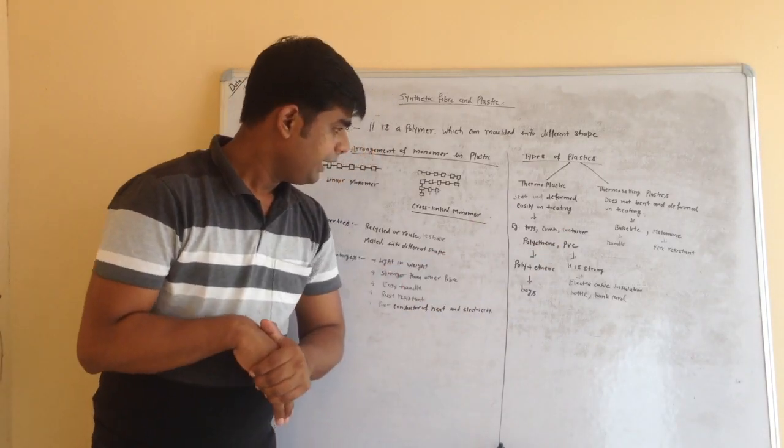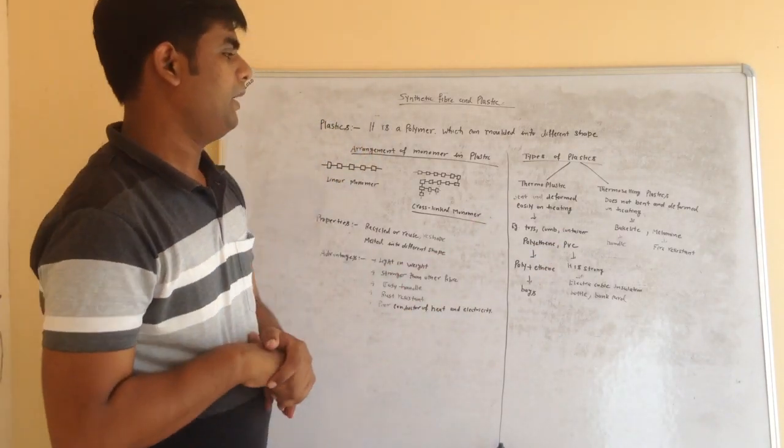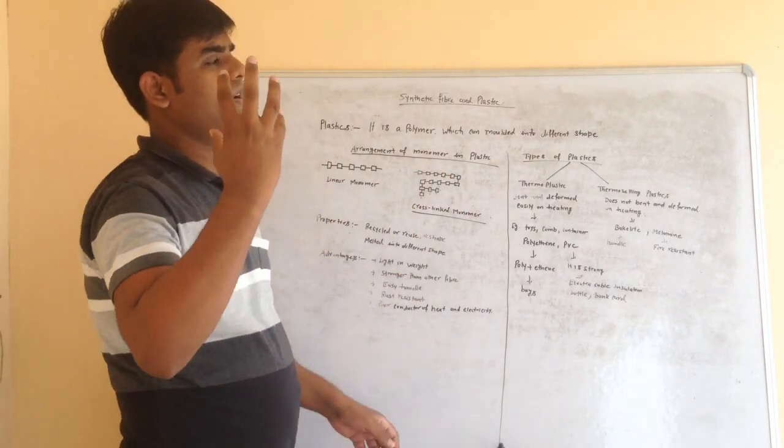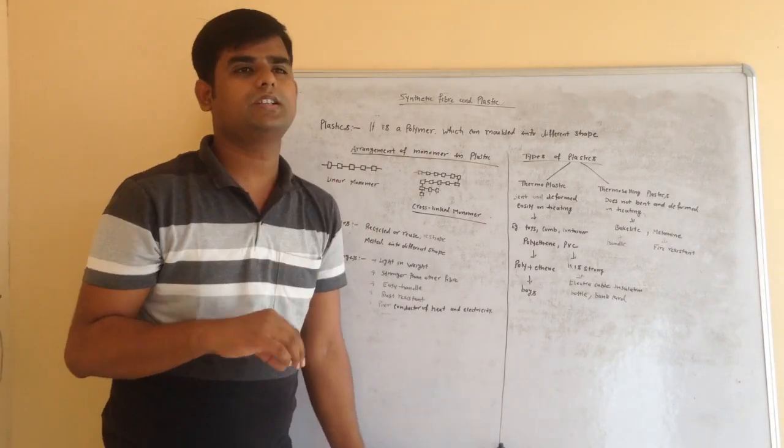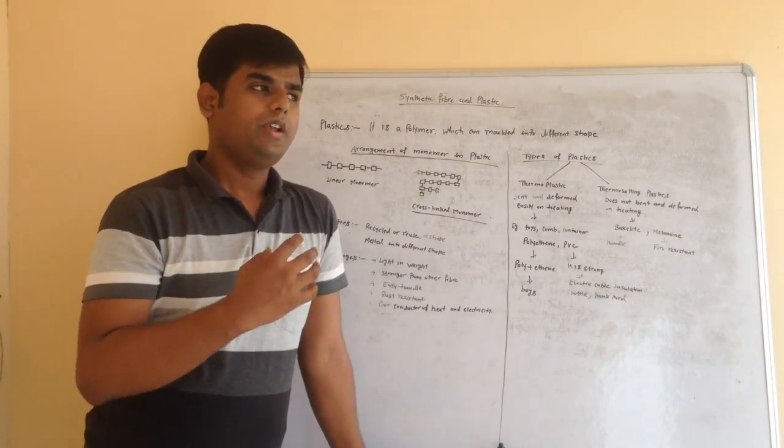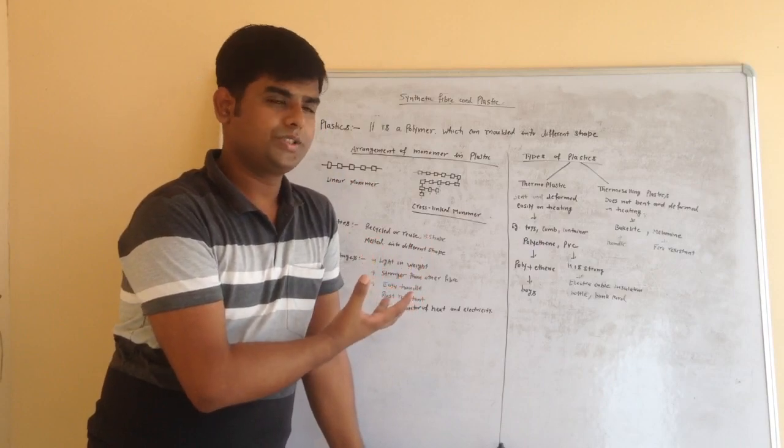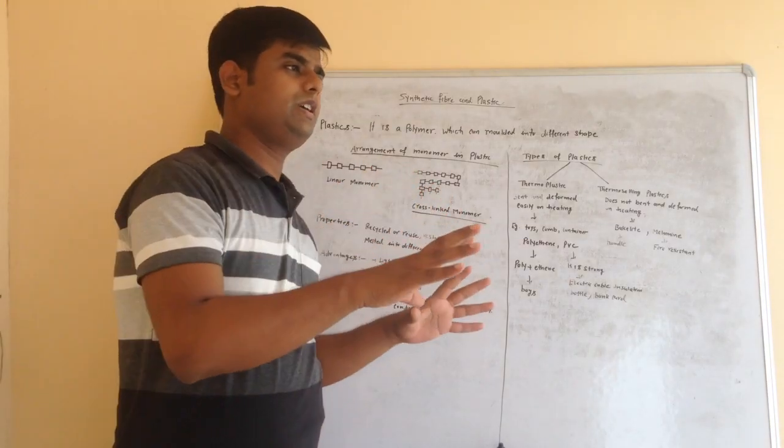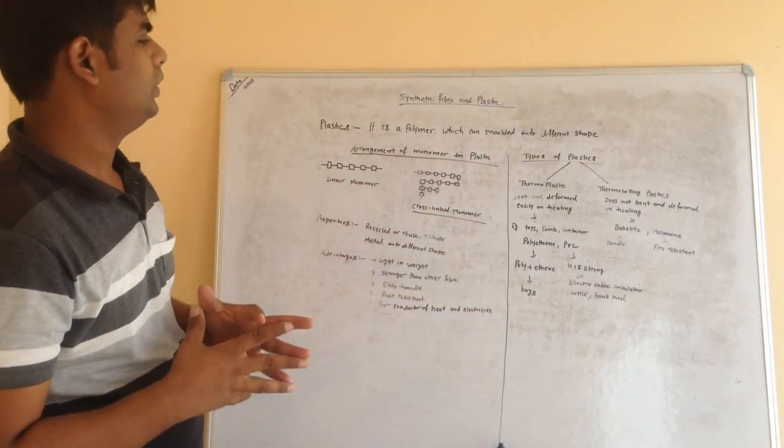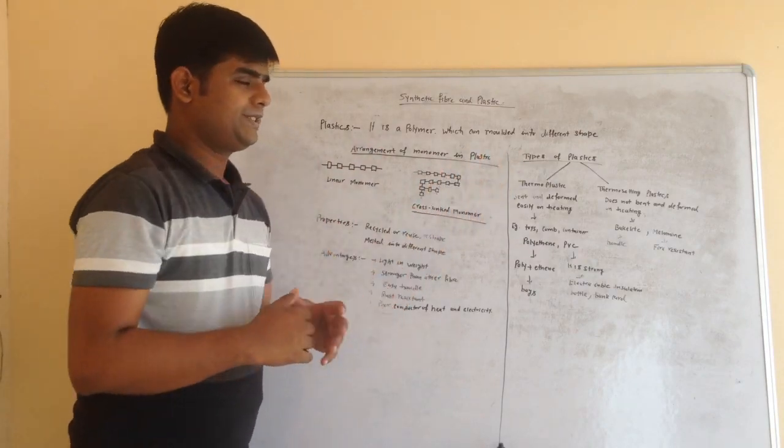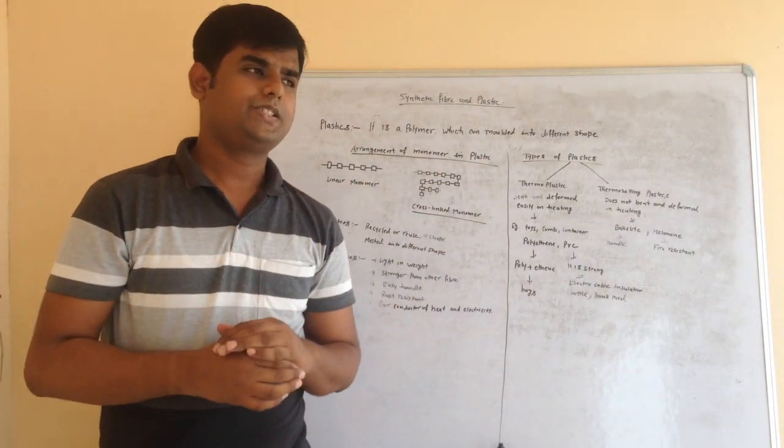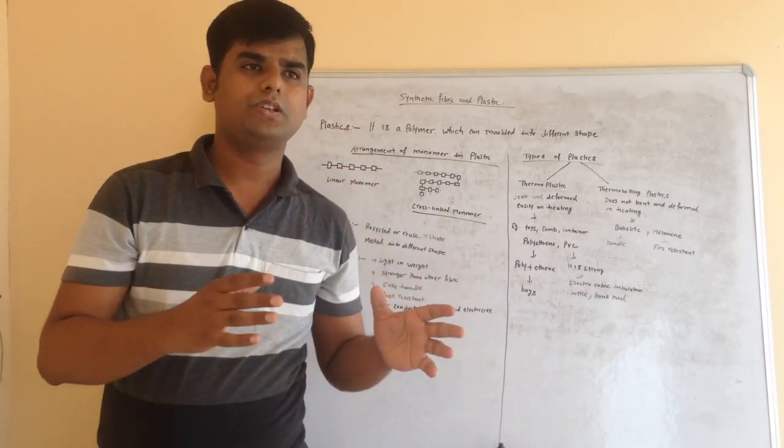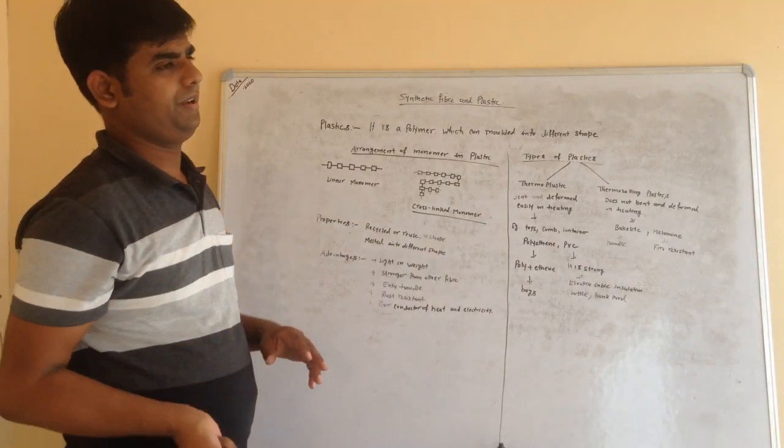Next, melamine. Melamine is also thermosetting plastic. The property of melamine is that it is fire resistant, which does not bend and mold or deform into other shape on heating.